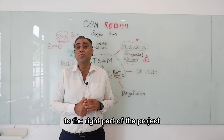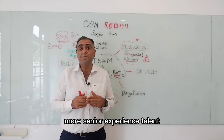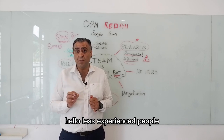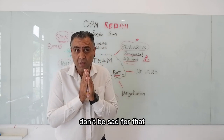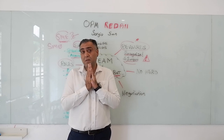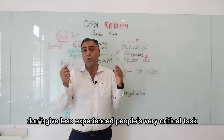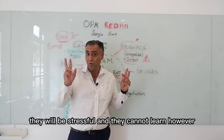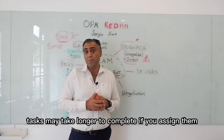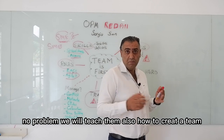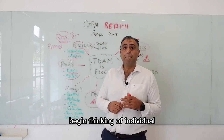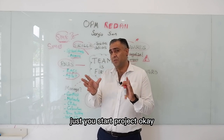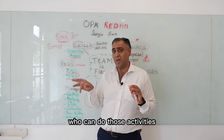Start by aligning the right skills to the right part of the project. More senior, experienced talent will help you do more work in less time. Allow less experienced and junior people to work on low-risk tasks — this will help those people grow and learn. Don't give less experienced people very critical tasks; they will be stressed and cannot learn. Tasks may take longer to complete, but no problem — we will teach them. Begin thinking about individuals in your organization who could get those jobs done, and consider which activities each person can handle.